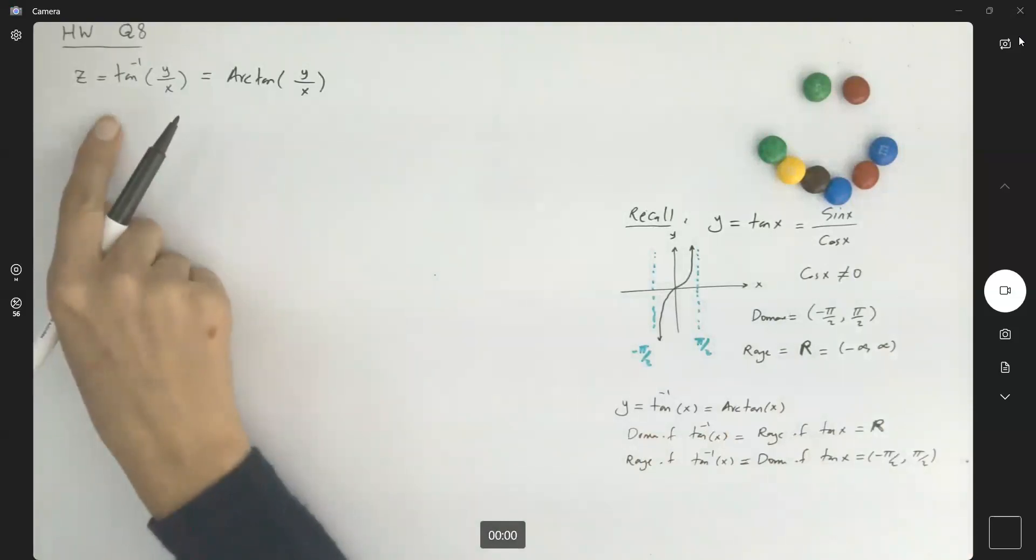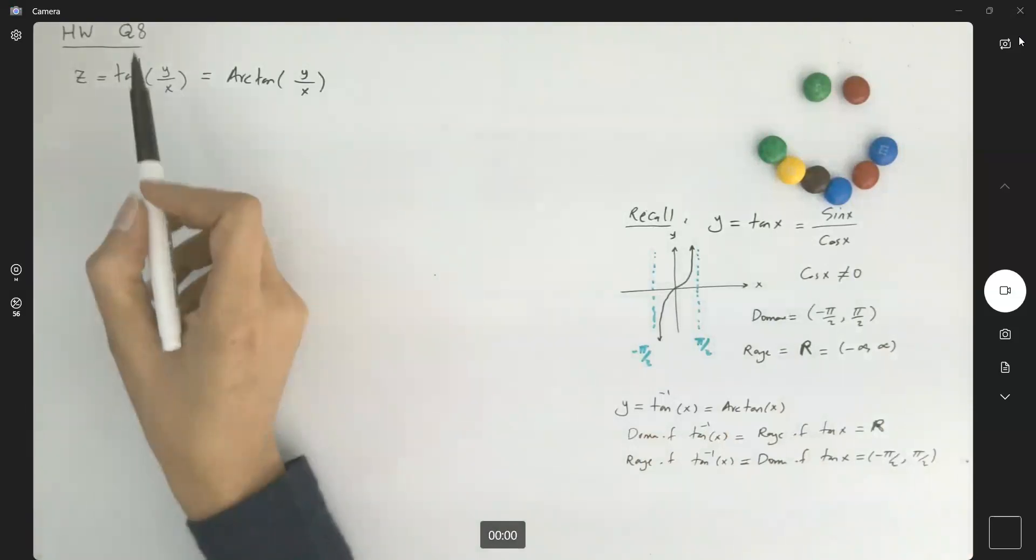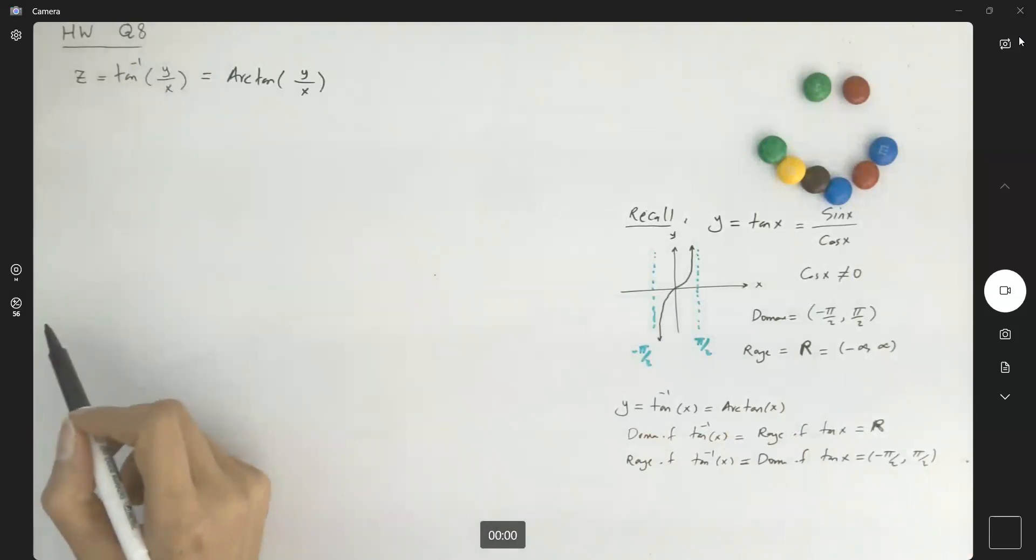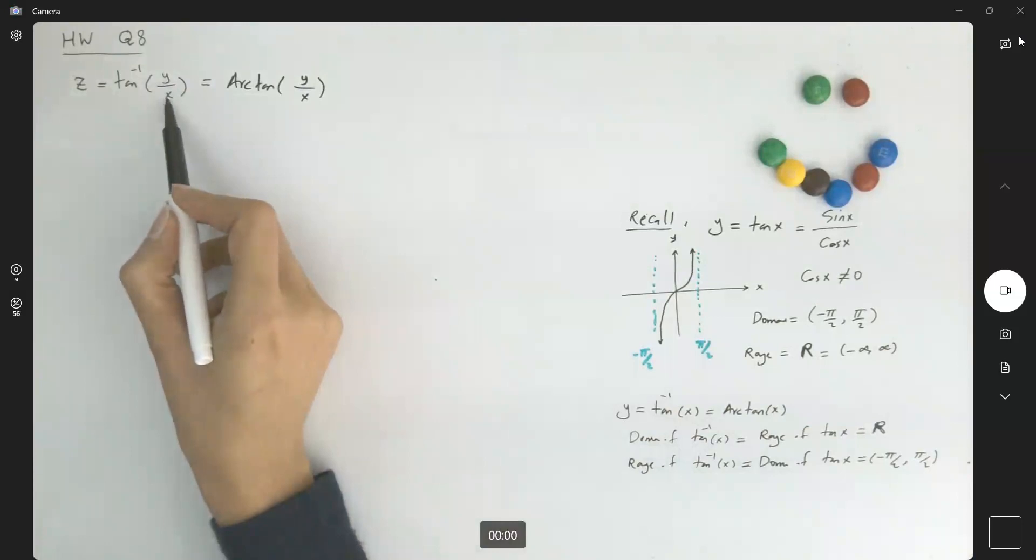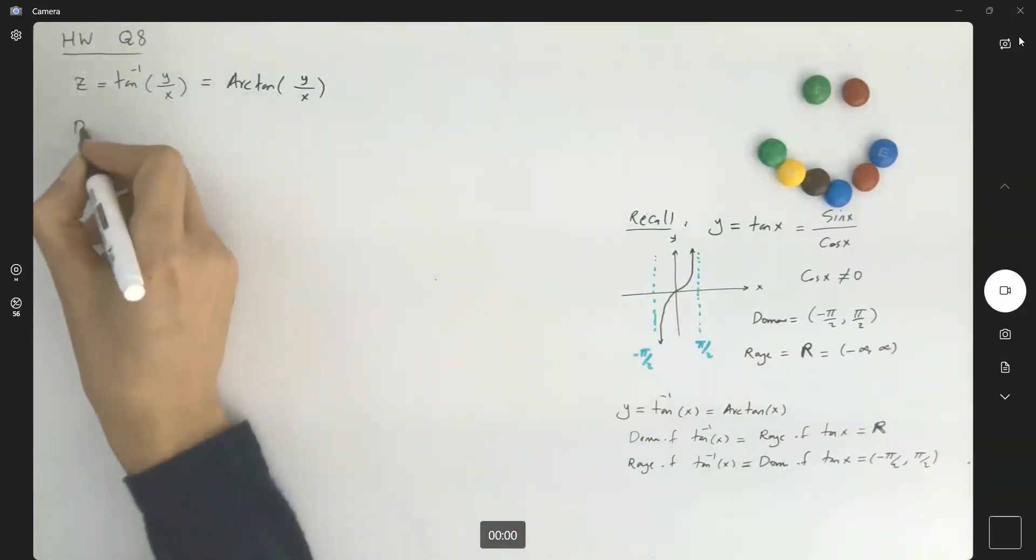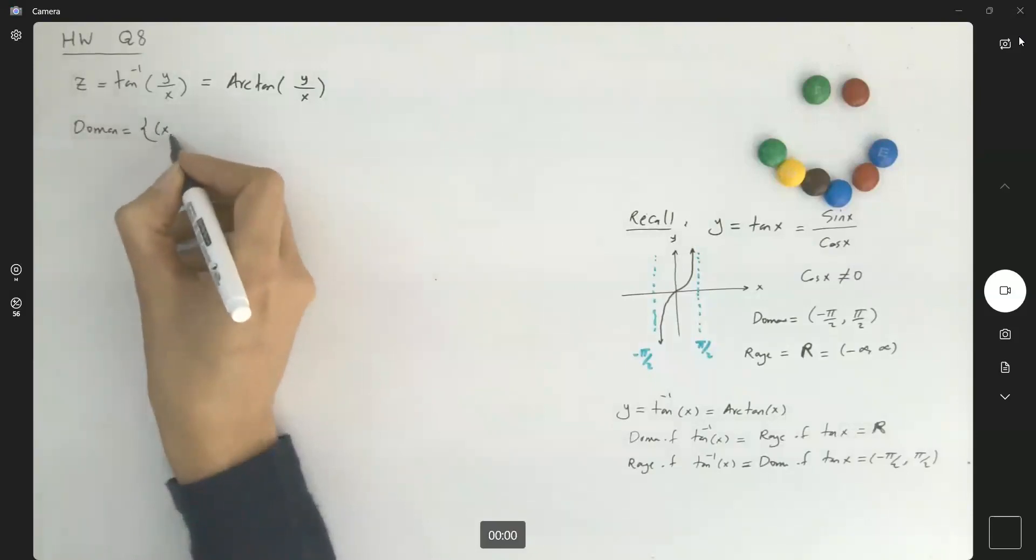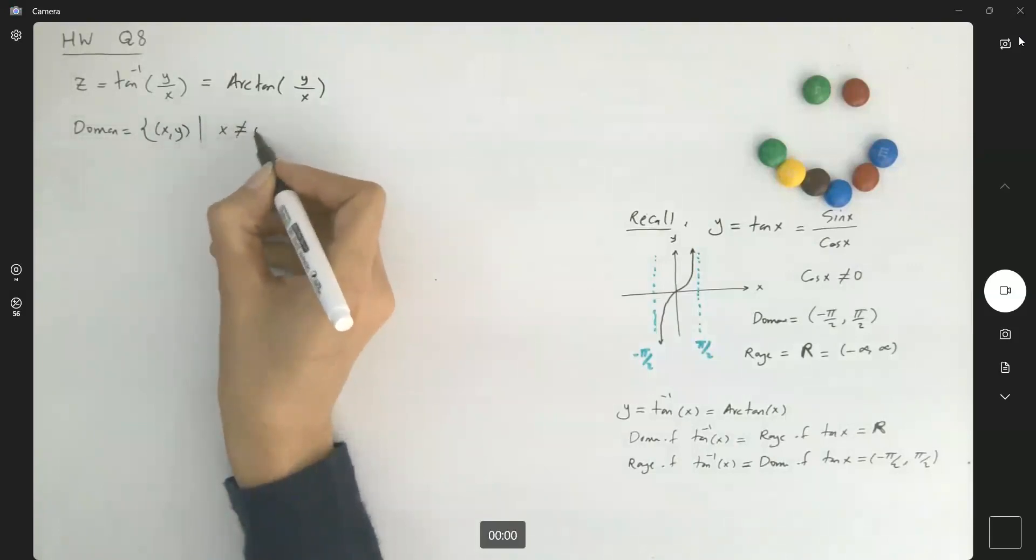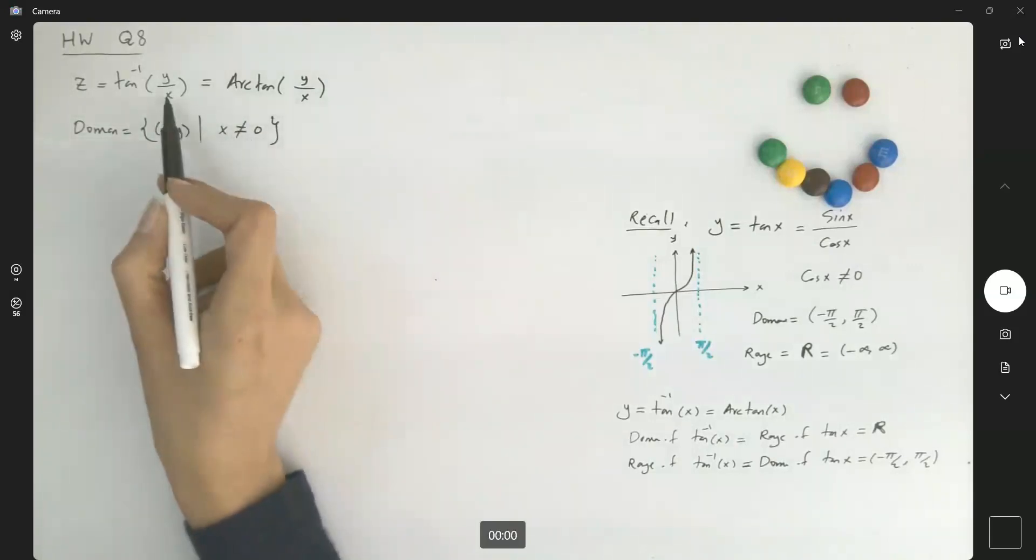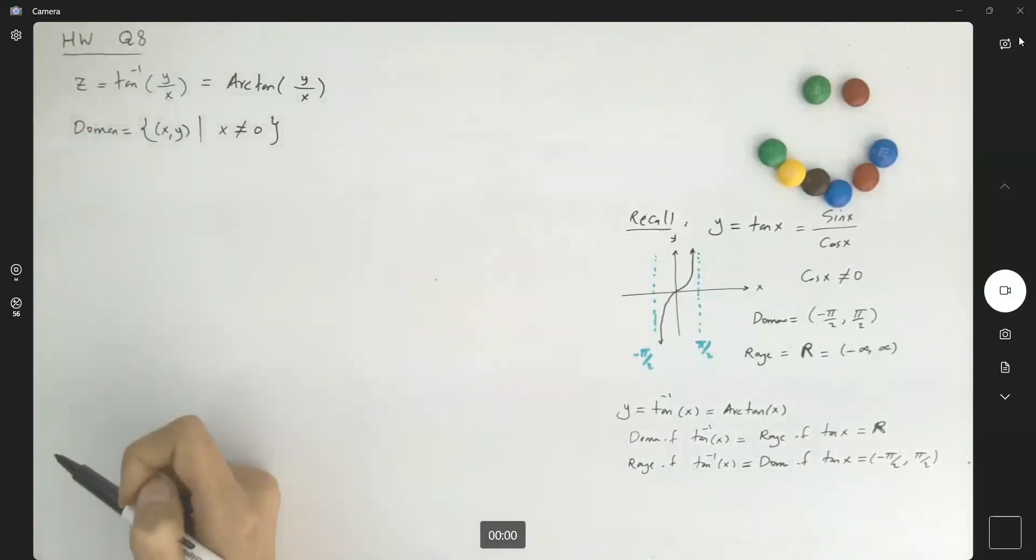Now, let's go back to your two variable function, inverse tangent of y over x. If it was x times y, it just follows the same method, the same analysis. Just be careful you have something on the denominator. The domain is the set of all x and y's such that x cannot be zero. Since x is on the denominator, it cannot be zero.